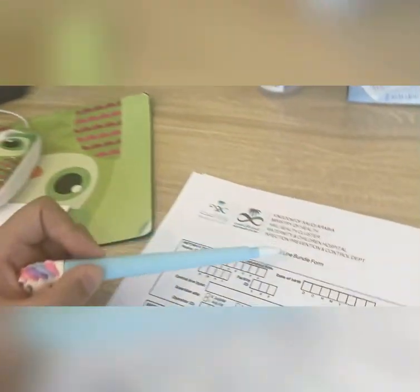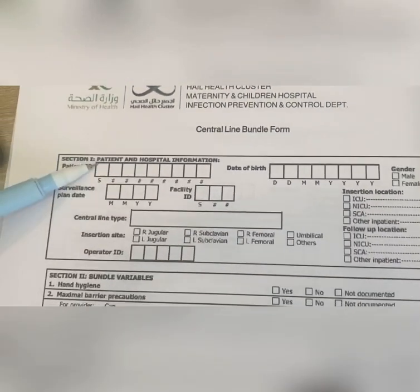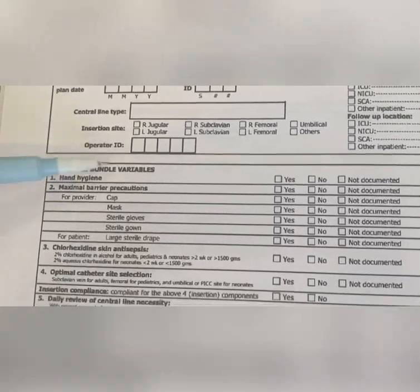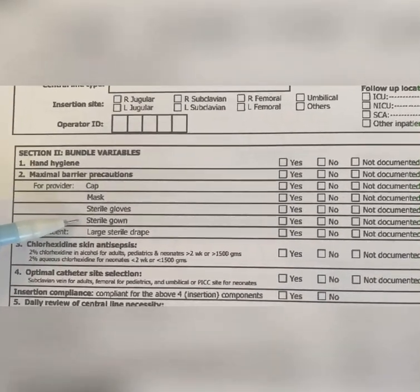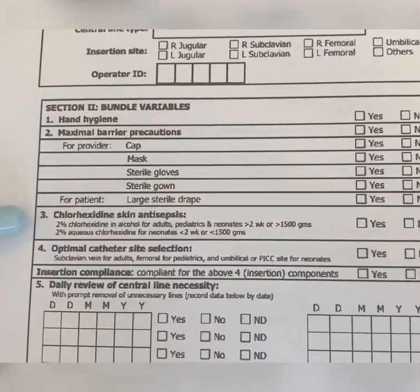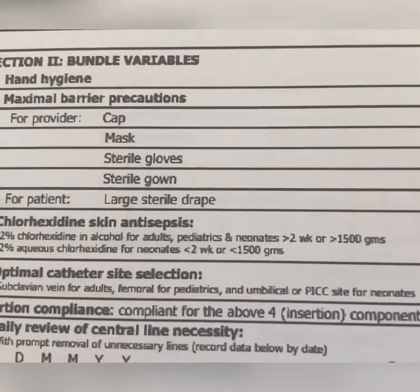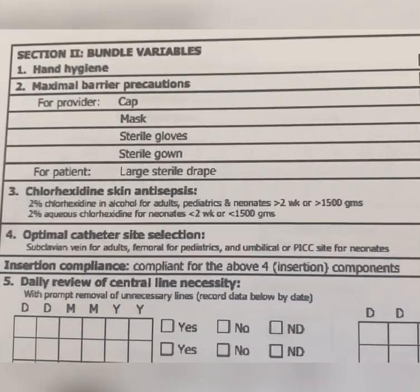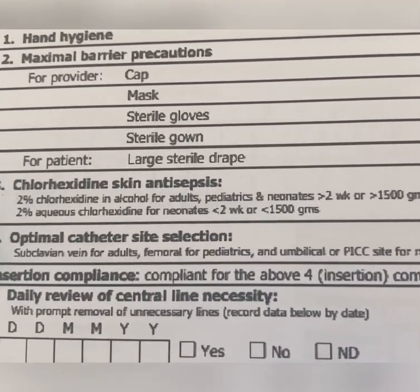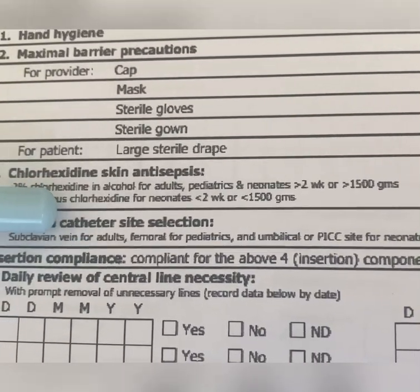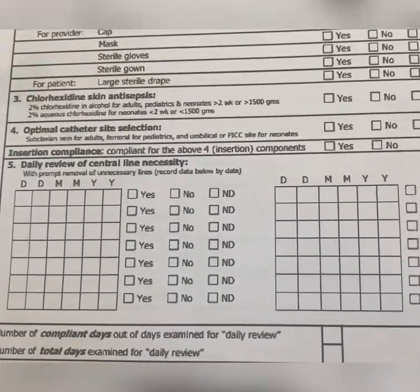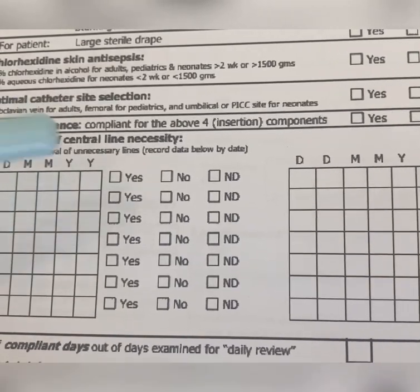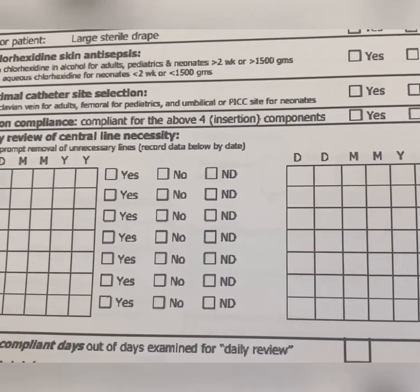We also have the central line bundle form. Fill in patient and hospital information. The most important part is section two — bundle variables: Did the doctor perform hand hygiene? Yes. When inserting the UVC, did he wear cap, mask, sterile gloves, gown, and drape? Yes. Number three: chlorhexidine skin antisepsis — if not available, we use povidone iodine in our hospital. Optimal catheter site selection: subclavian vein for adults, femoral for pediatrics, and umbilical or PICC. Finally, daily review of central line necessity — fill the date and put yes.